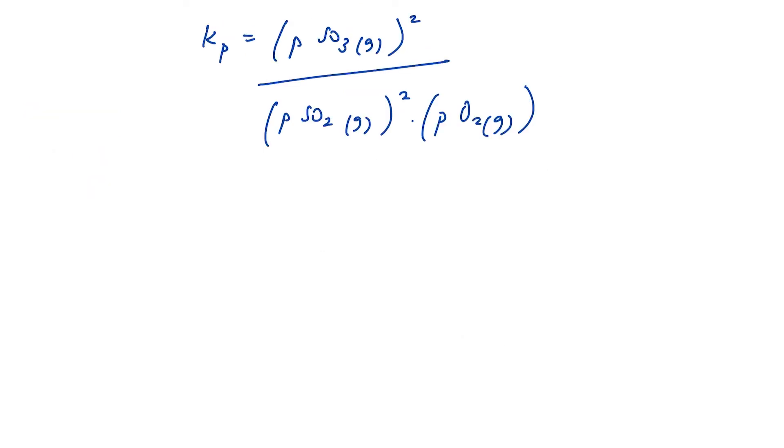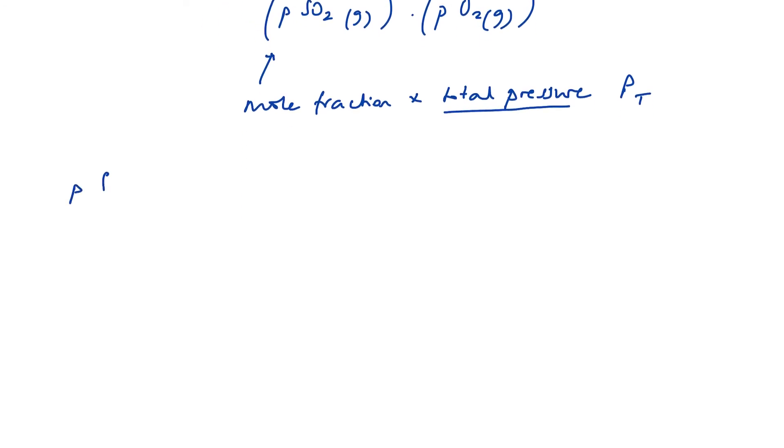Let's return to our expression for Kp. We need to know the partial pressures of each of our gases, and the partial pressure of a gas is the mole fraction times the total pressure, which we don't know. This is exactly what we've been asked to find. So we're going to give that a symbol, Pt. So to find the partial pressure of sulphur trioxide, it's going to be the mole fraction. So that is number of moles at equilibrium, 1.80 divided by the total number of moles. And if you add up 1.8 plus 1.1 plus 0.2, it comes to 3.1 times the total pressure. And that is 0.581 times total pressure.